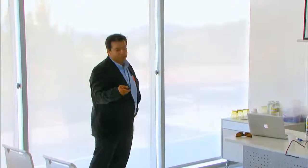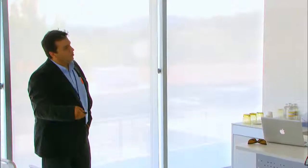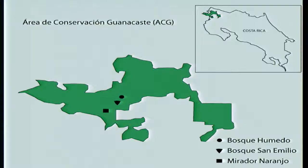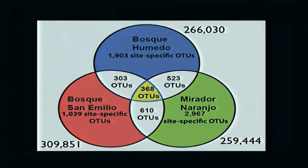Jennifer's PhD project is ongoing — we have done three years of sampling and will continue. Another system is going to the tropics to understand the diversity of these macrobiome assemblages using malaise traps. These are three sites in Costa Rica that we sampled. This is a Venn diagram of what you get — the number of reads for each and the OTUs or species built for each site.